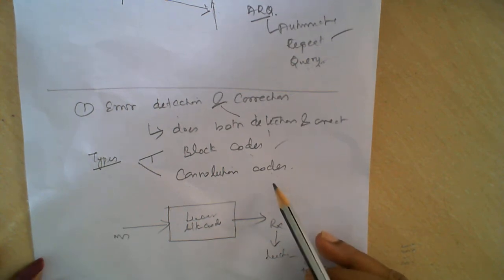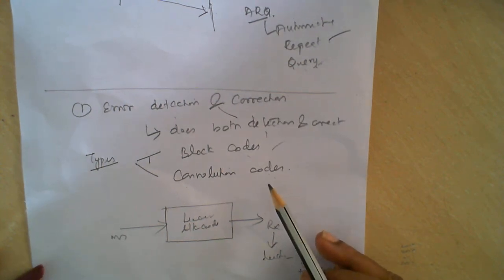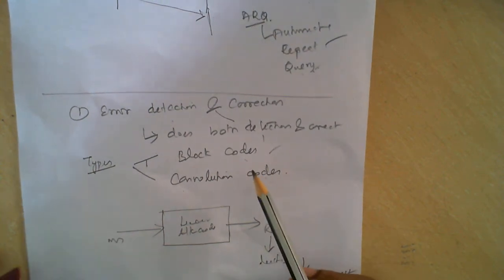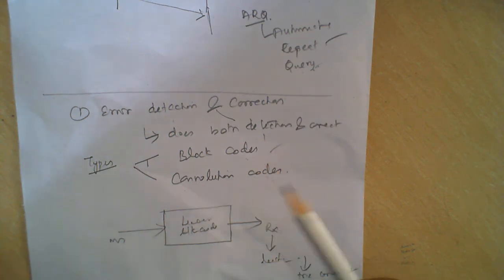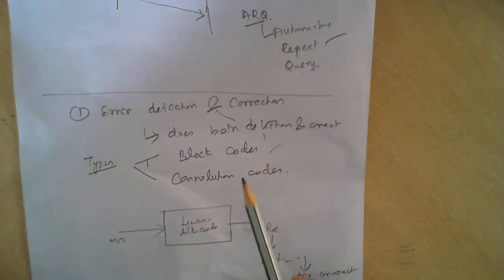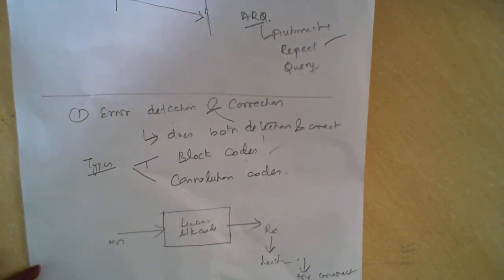Hope you understood why we go for information coding theory and these block codes and convolution codes. In the next video I will explain what block codes are, and after that we will go for problems directly. Hope you understood. Thank you.